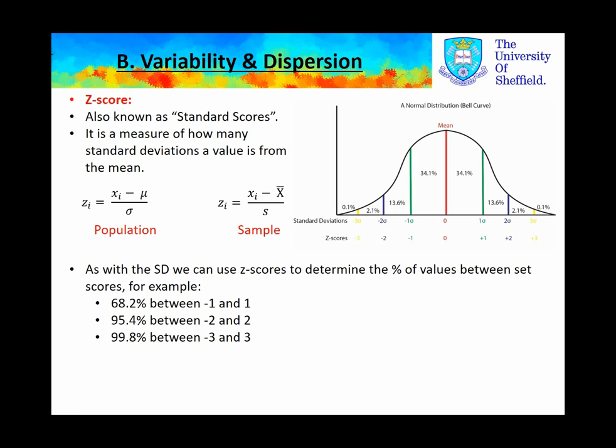As with the standard deviation, we can use Z-scores to determine the percentage of values between set scores. For example, 68.2% of the data in any normally distributed data set should lie between minus 1 and 1, and so on.